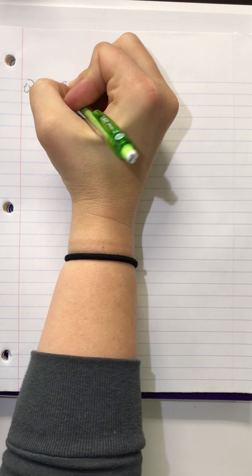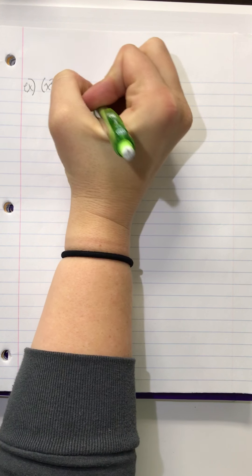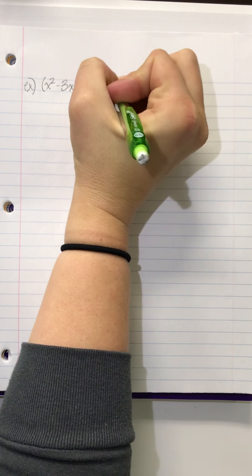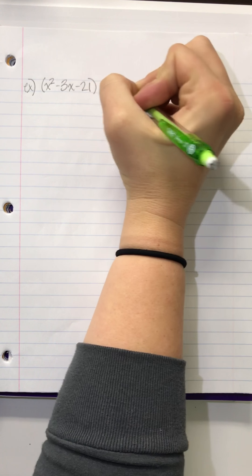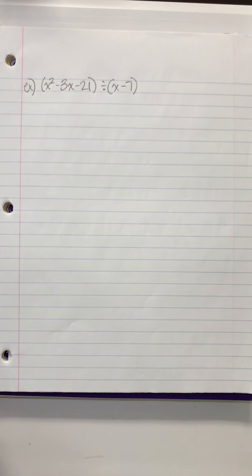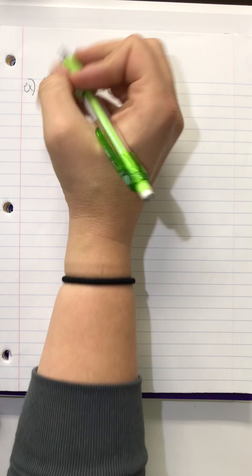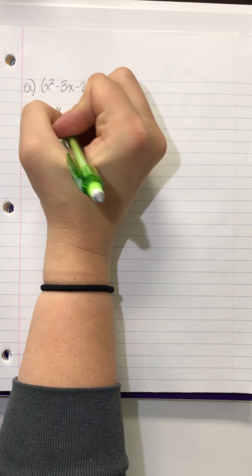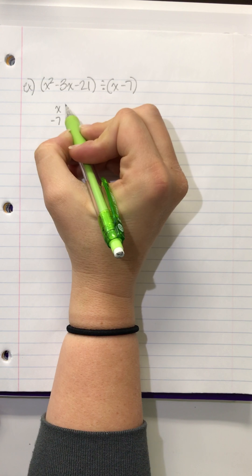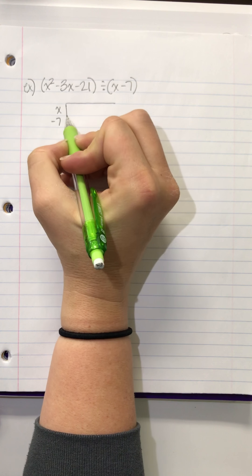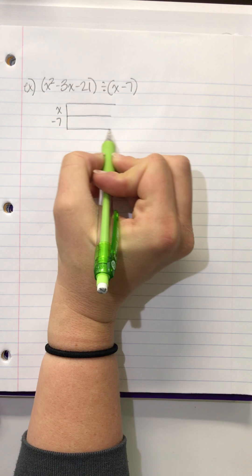So, x squared minus 3x minus 21 divided by x minus 7. I don't know what you're thinking, but it's got a 7 and a 21. It must work out clean. No, it does not. I'm going to start out the same. I know x minus 7 is going to set up my box. I don't know how long my box is going to go.